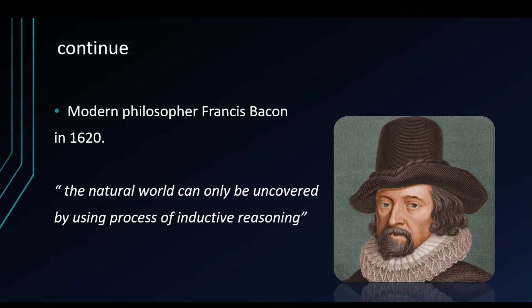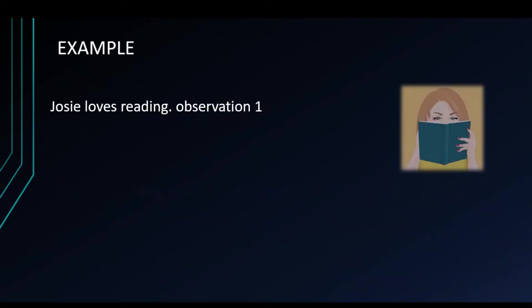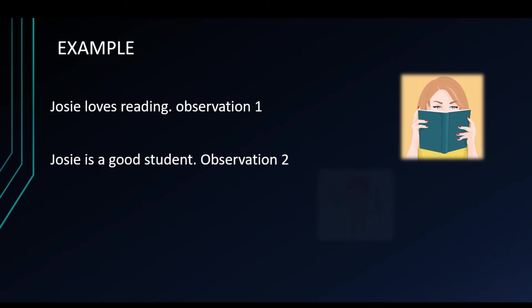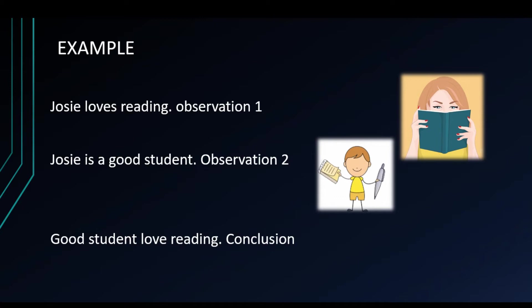Here is an example of inductive reasoning. Josie loves reading. Josie is a good student. Therefore, good students love reading. You can probably see some differences from deductive reasoning. First of all, probability — this conclusion that good students love reading is not certain. At most we can say that it is probable. We might find a couple of good students who do not love reading; maybe they read because they know it's important.